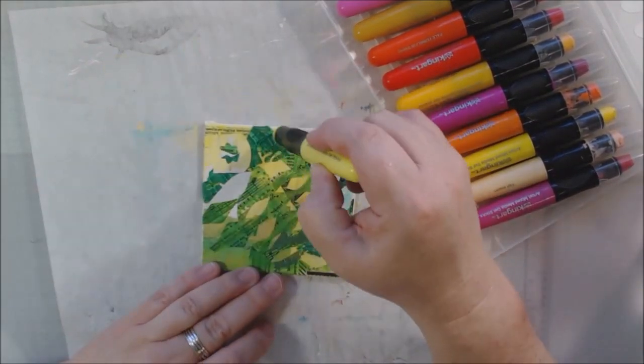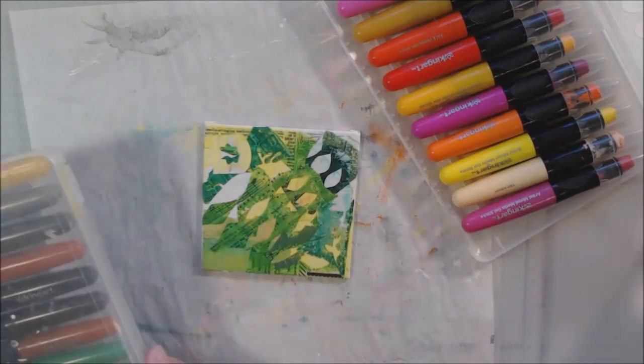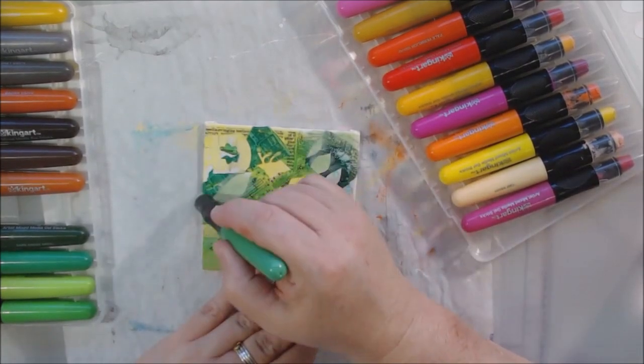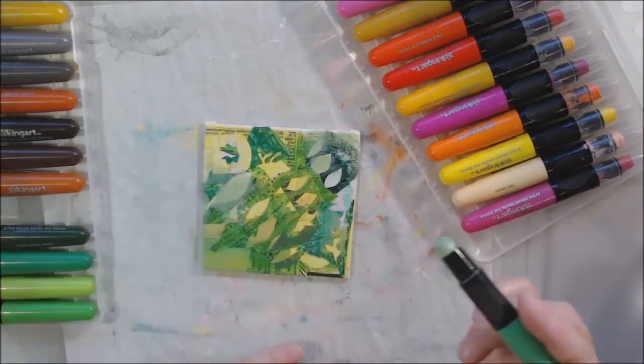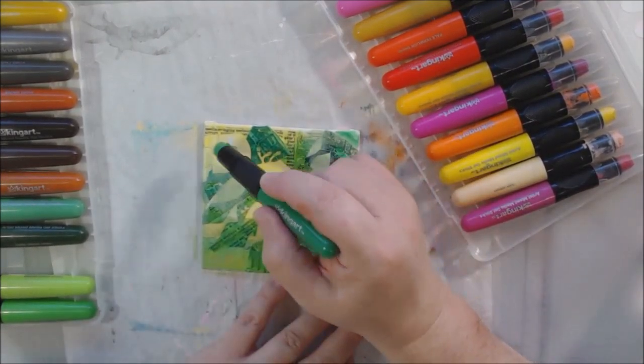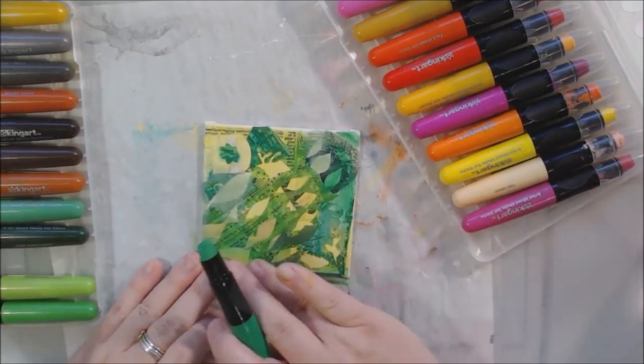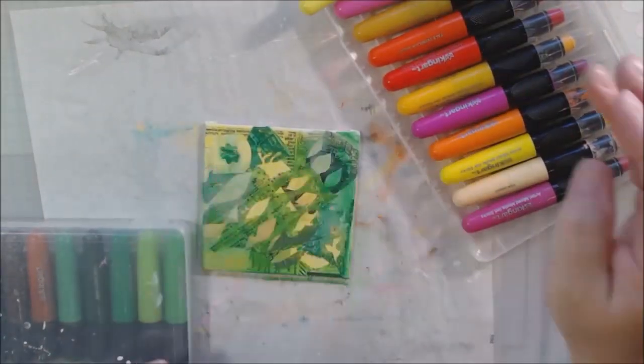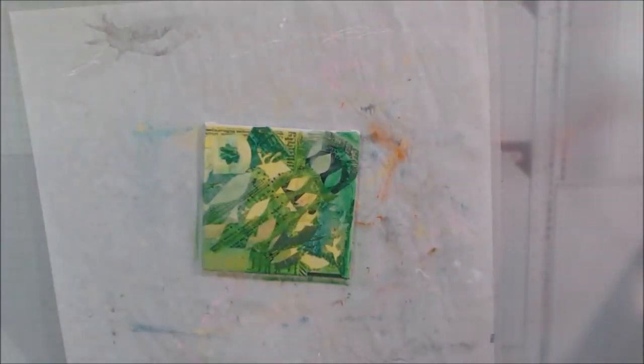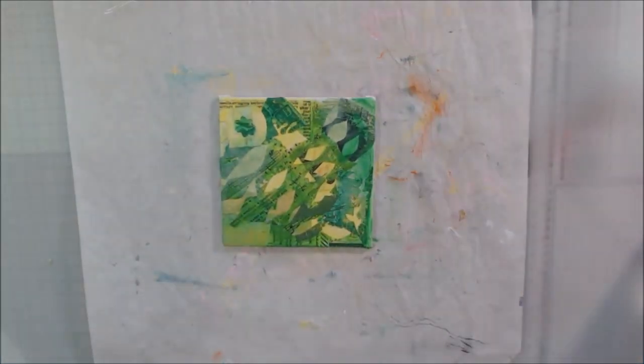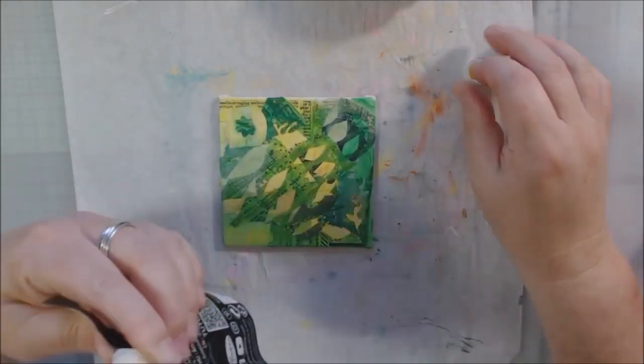There was some canvas still showing and I decided to just fill in those white spots with these King Art gel sticks because it's quick and I can fill in the crevices of the canvas texture really super quickly. So I grabbed a few of those, yellow and a couple different greens.